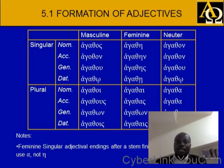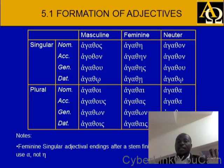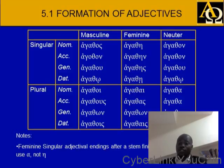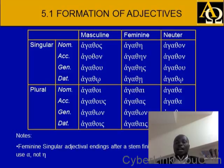Let's look at how the adjective forms — the formation of the adjective. Just like we have looked at the three genders of nouns, we also have three genders in adjectives. And the same way we have two numbers, singular and plural, and also cases: nominative, accusative, genitive, dative — in singular and in plural.